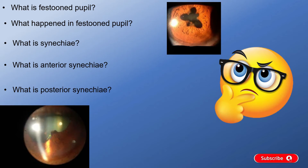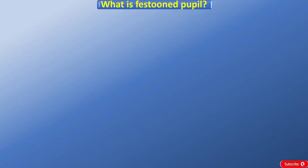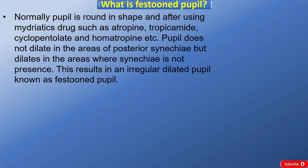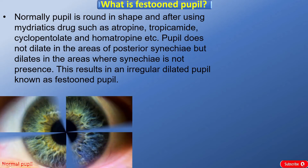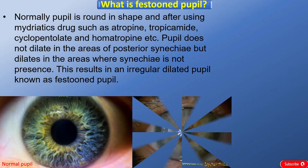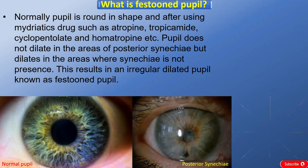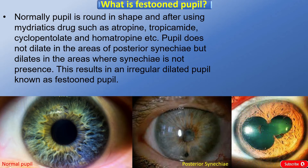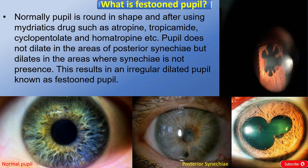Friends, firstly we will try to understand what is festooned pupil. Normally the pupil is round in shape, and after using mydriatic drugs such as atropine, tropicamide, cyclopentolate, and homatropine, the pupil does not dilate in the areas of posterior synechia but dilates in the areas where synechia is not present. This results in an irregular dilated pupil known as festooned pupil.